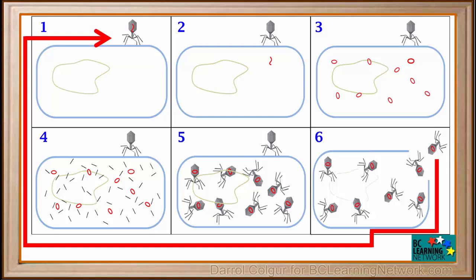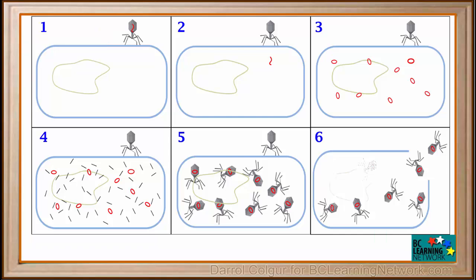You can see that using this process, the population of viruses can grow very rapidly. Viruses can use a similar process to replicate and multiply in our body. Luckily, we have an immune system which helps to bring their population under control. You will learn more about the immune system as you go through this course.